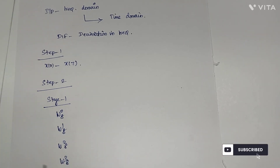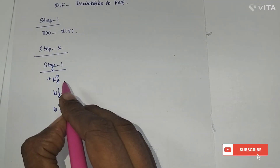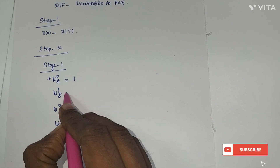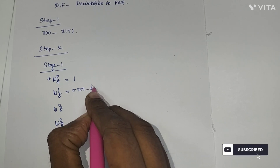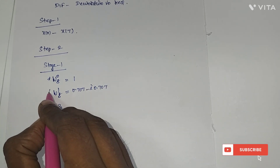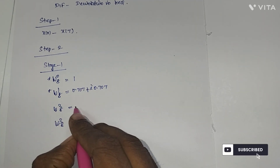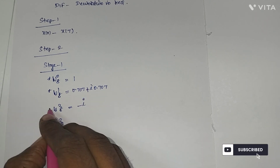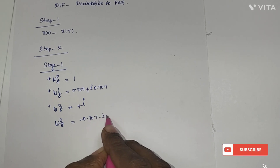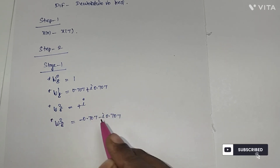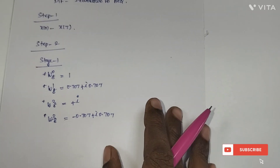In the case of IDFT, we have to write the twiddle factors in their conjugate form. For W0_8, the value is 1. For W1_8, the value is 0.707 minus i·0.707, so its conjugate is 0.707 plus i·0.707. For W2_8, the value is minus i, so its conjugate is plus i. For W3_8, the value is minus 0.707 minus i·0.707, so its conjugate is minus 0.707 plus i·0.707.